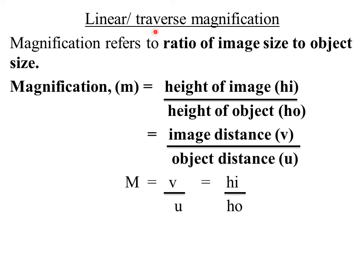Magnification is defined as the ratio of the image size to the object size. The formula is: magnification M = v/u, where v is the image distance and u is the object distance. This is also equal to the height of the image divided by the height of the object. So M = v/u = hi/ho. Magnification tells us whether the image has been magnified or diminished relative to the object.